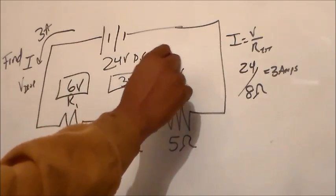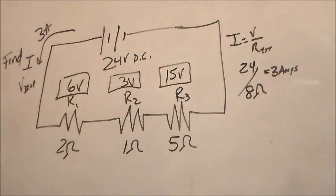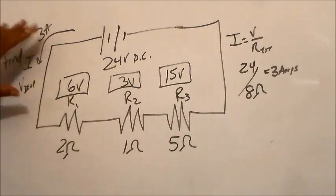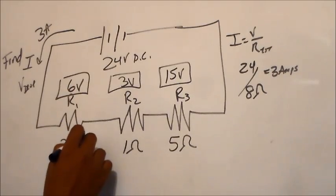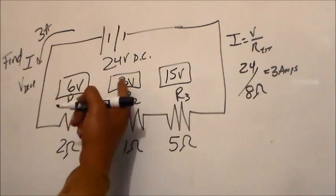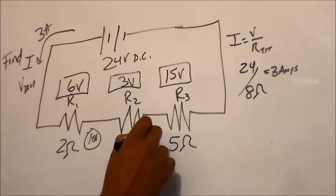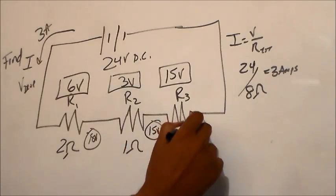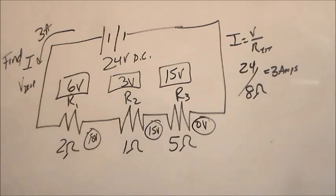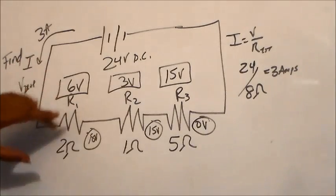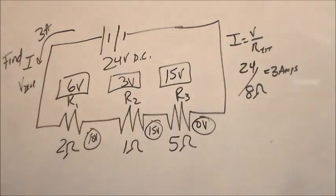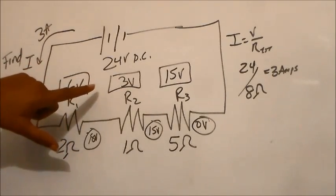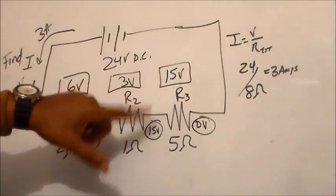To check: we start with 24 volts, drop 6 — 18 volts remaining. Lose another 3 — 15 volts remaining. Then 15 volts drop leaves 0 volts remaining, because it's run all across the system. So the resistors take away exactly enough voltage for their resistance. Hopefully you got 6 volts across R1, 3 volts across R2, and 15 volts across R3.